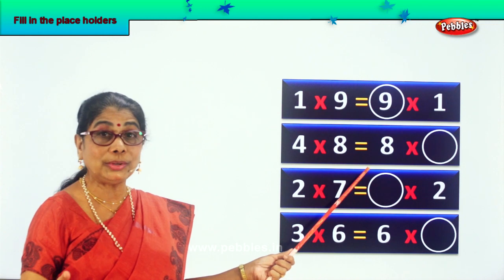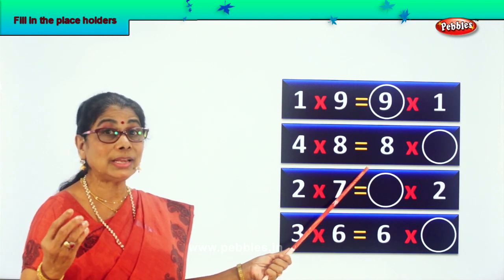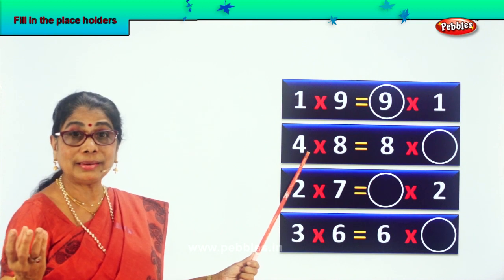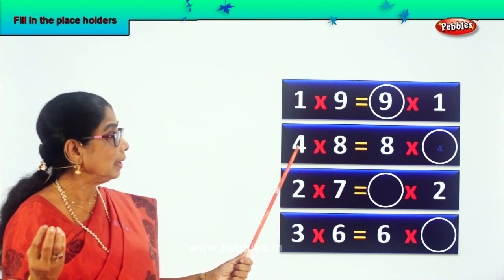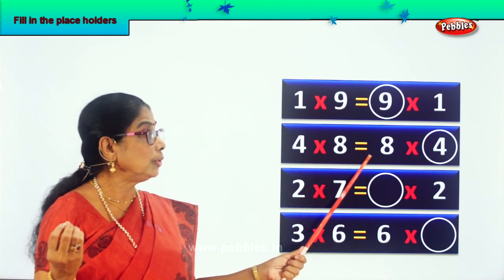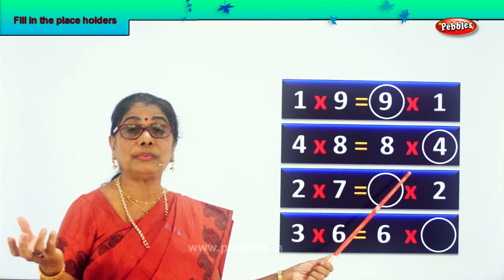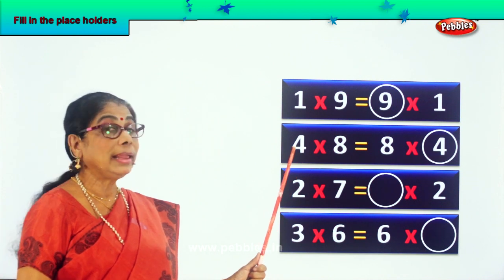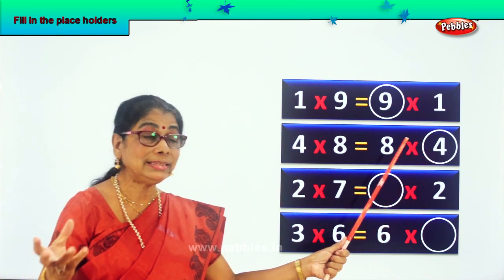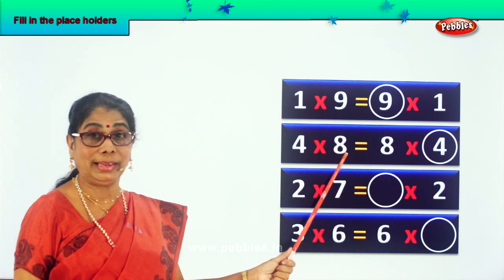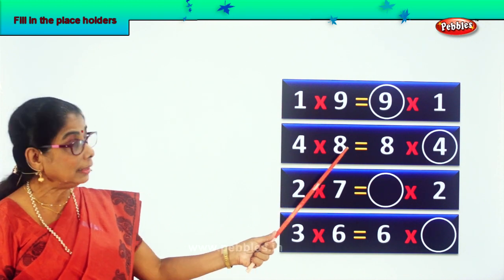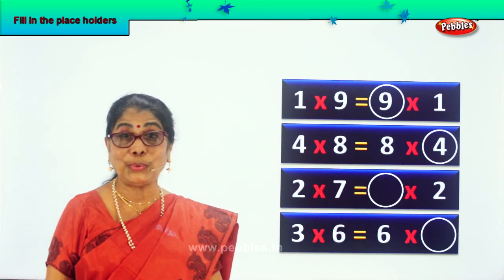Look at this. 4 into 8 is equal to 32. 4 into 8 is also equal to 8 into what? 4. Now, 8 into 4 is the same as 4 into 8. Again, we reverse the numbers. 4 into 8 is also equal to 8 into 4.